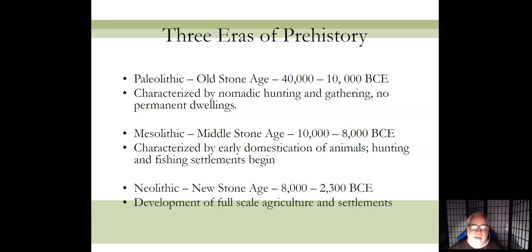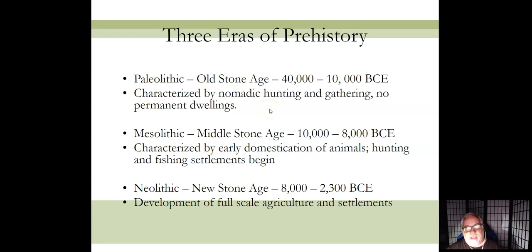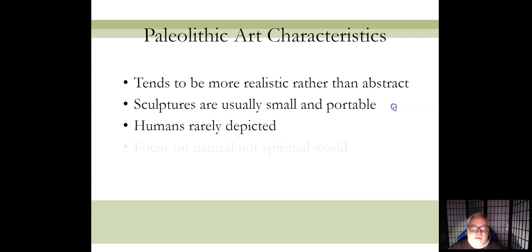Prehistory can be divided into three neat periods. The dates aren't important, but you need to know the three different eras and what they are: Paleolithic, Mesolithic, and Neolithic — Greek words meaning Old Stone Age, Middle Stone Age, and New Stone Age. The Paleolithic age is basically hunters and gatherers, nomads following animals with no permanent dwellings. By the Mesolithic period, people learned to round up animals and fish, with some small settlements starting. By the Neolithic age you have agriculture, full settlements, villages, cities, and eventually civilizations.